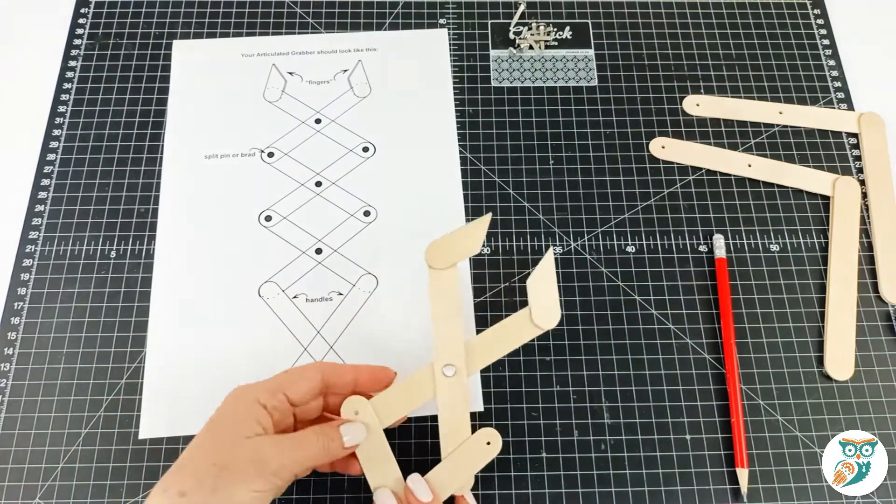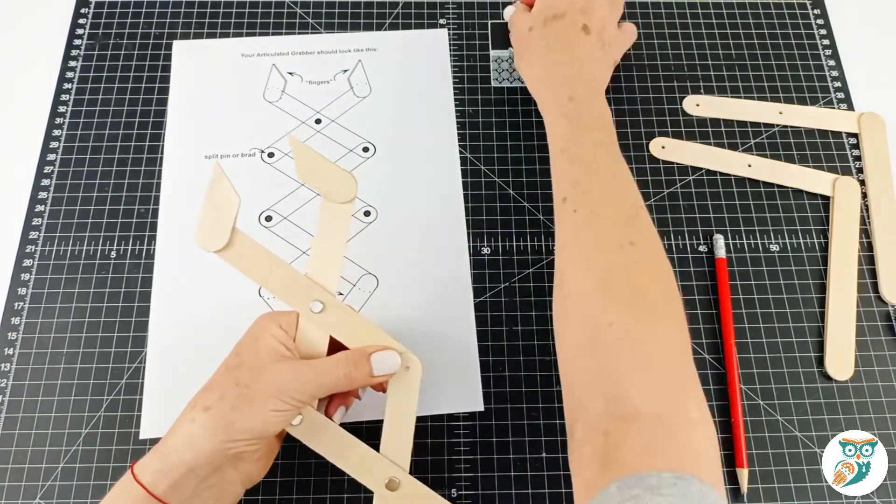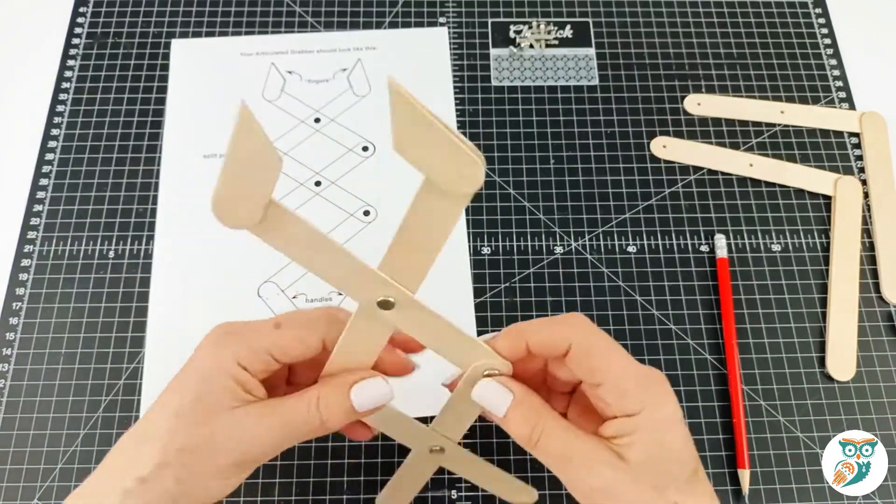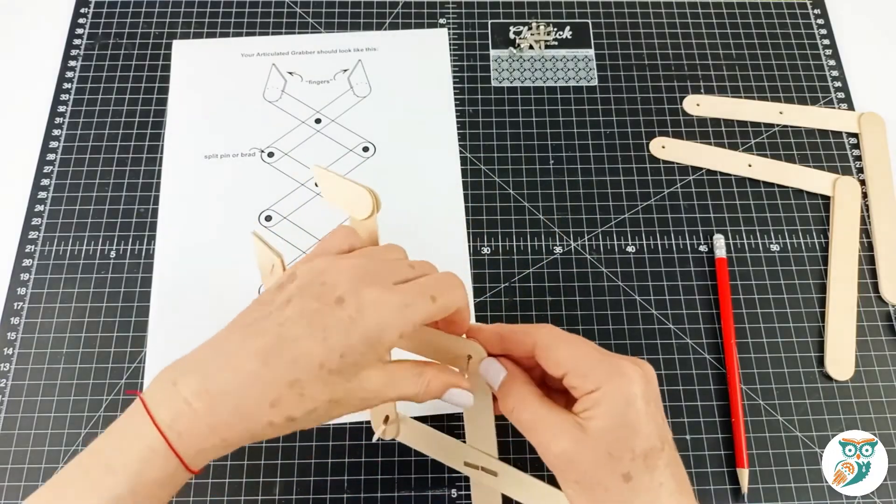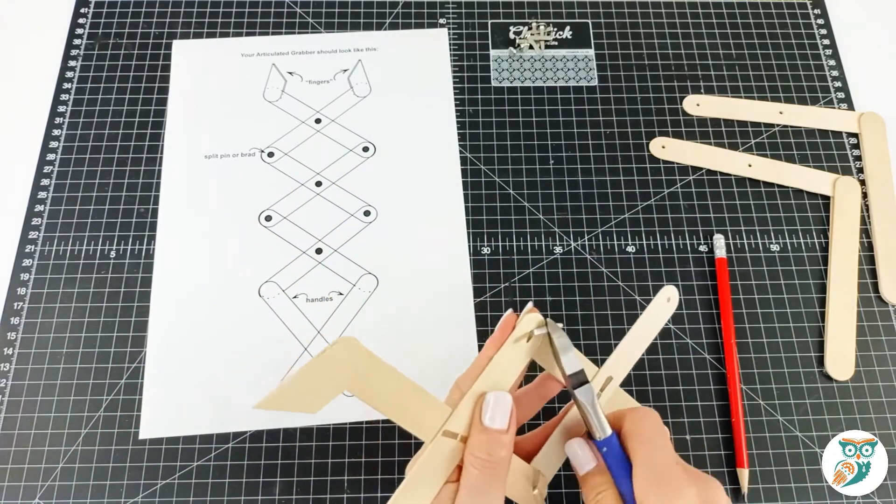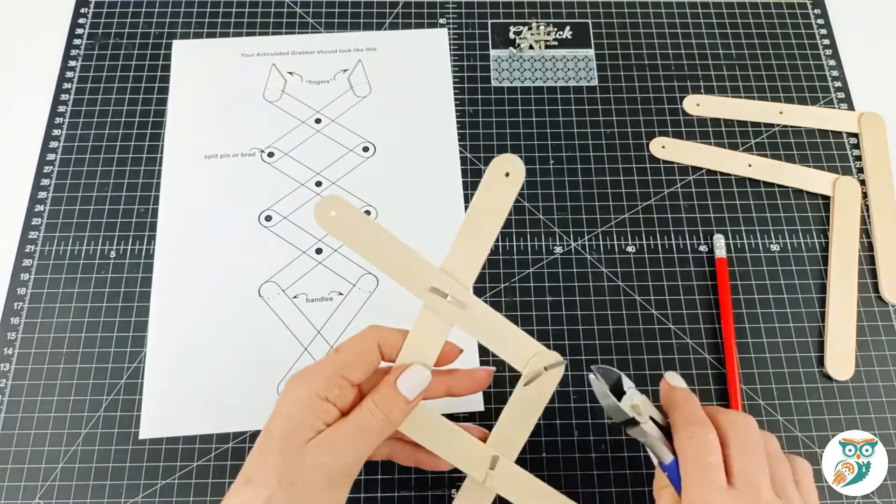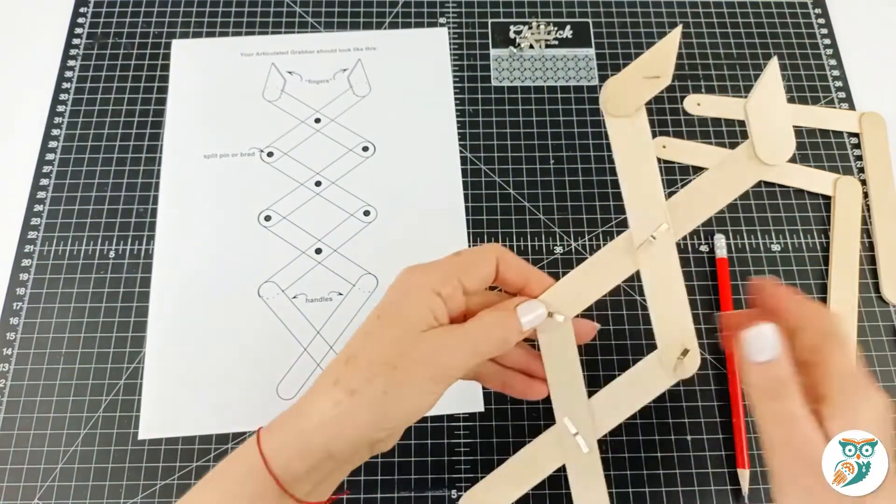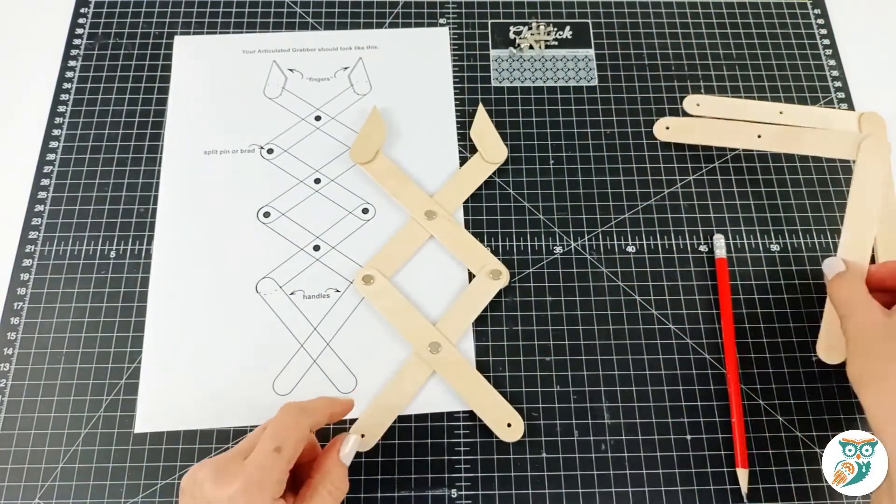There we go. And we're just going to keep lining up and building as we go through and putting it all together. And each of these split pin joints are going to be movable joints, kind of like the knuckles on your fingers. They're going to be moving whenever we use our trash grabber.